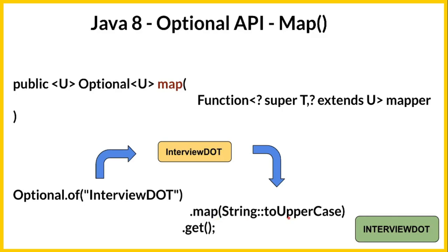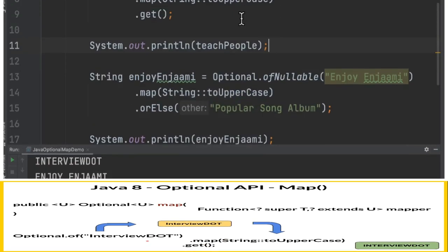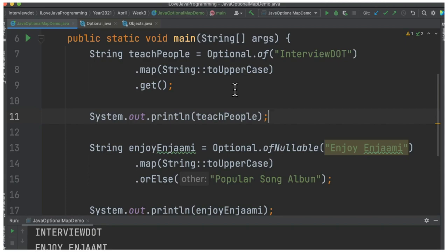The map method is going to take the Optional value and apply the function to it. It takes the Optional value, applies this method to it, and then using get we can retrieve the value back. In the main method I've written two examples: one using Optional.of and the next using Optional.ofNullable.